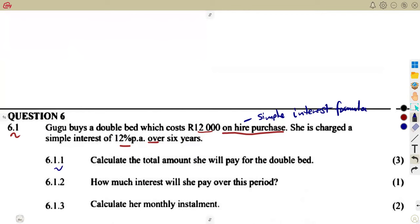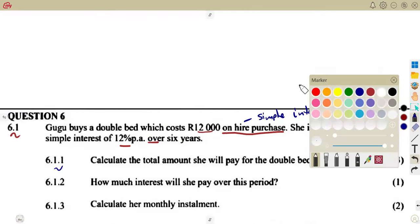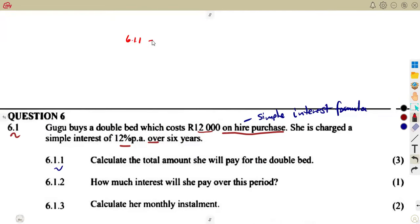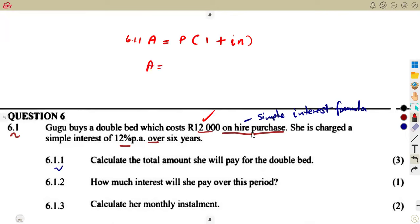We need the accumulated amount. This is a straightforward question. Using simple interest, this is question 6.1.1. Your accumulated amount or total amount is A = P(1 + iN). The principal — the money on hire purchase — is the one you take as your principal. Be careful. So that's R12,000.